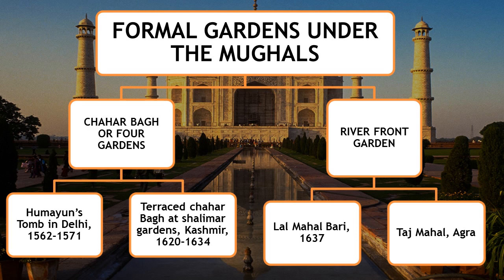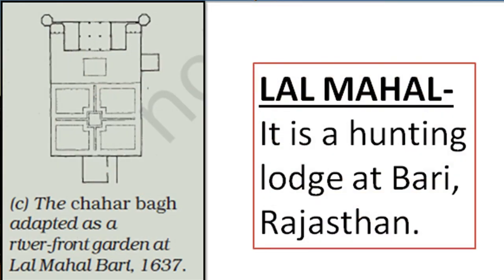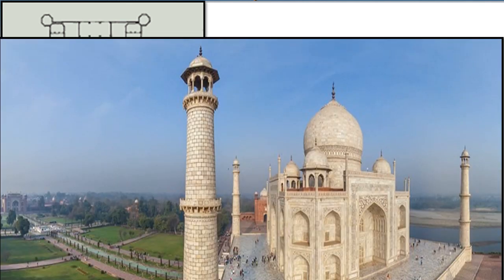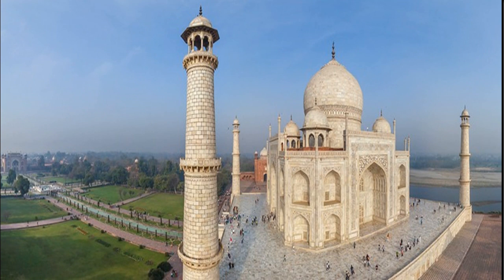One example of a riverfront garden is Lal Mahal at Bari in Rajasthan, which was used by kings as a hunting lodge. As seen in the map, in front of the main structure there are chahar bags, and at the back side there is a water body. Another example is the Taj Mahal — at the back side there is the Yamuna River, and in the front there is a chahar bagh.